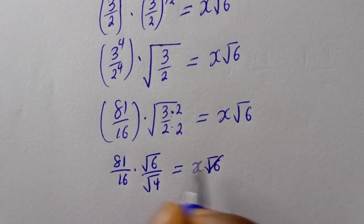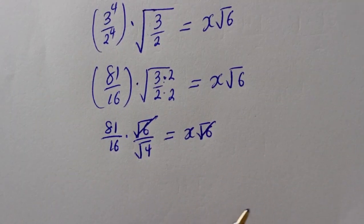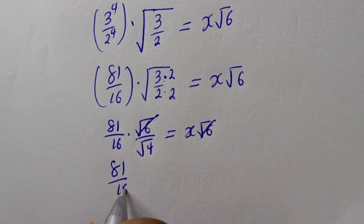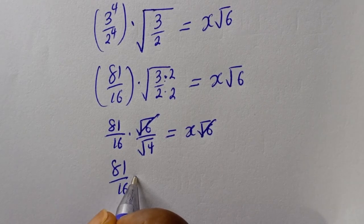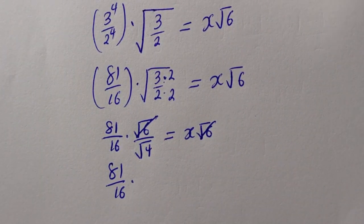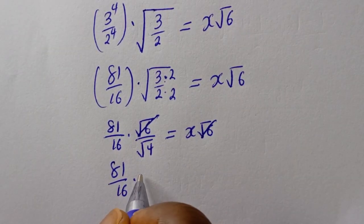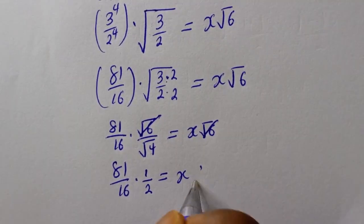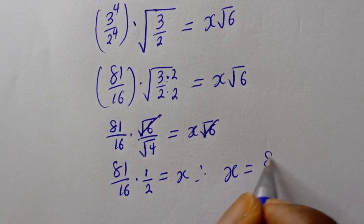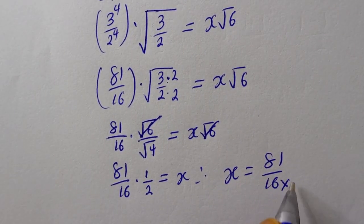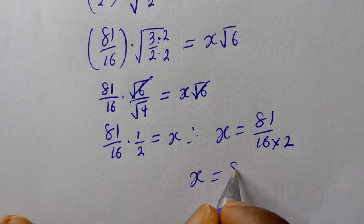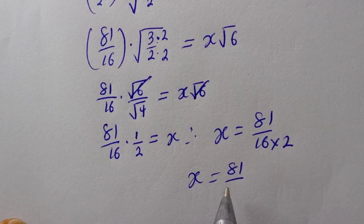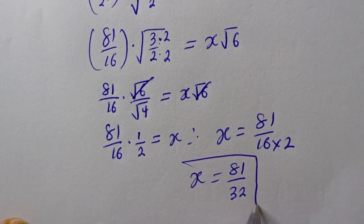The square root of 6 will cancel, leaving 81 over 16 multiplied by 1 over square root of 4, which is 2, equals x. Therefore x is equal to 81 over 16 times 2, that is 81 over 32, and this is the final answer.